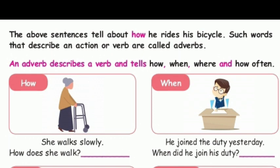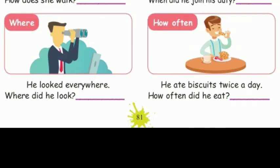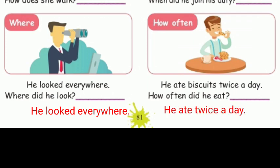Example one — How: 'She walks slowly.' How does she walk? She walks slowly. Example two — When: 'He joined the duty yesterday.' When did he join his duty? Yesterday. Example three — Where: 'He looked everywhere.' Where did he look? Everywhere. Example four — How often: 'He ate biscuits twice a day.' How often did he eat? Twice a day.